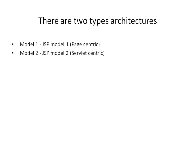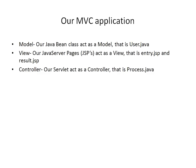As far as our application development is concerned, we are going to use the Servlet-Centric Approach. Our MVC application contains one JavaBean class, User.java, which will act like a model. Our JSP pages, Entry.JSP and Result.JSP, will act like views, and our Process Servlet will act like a controller.